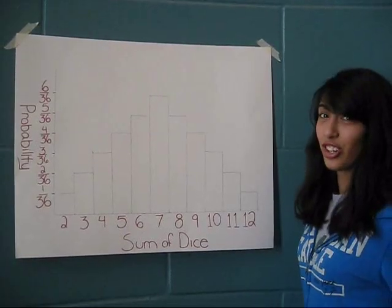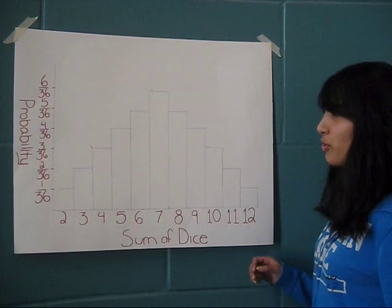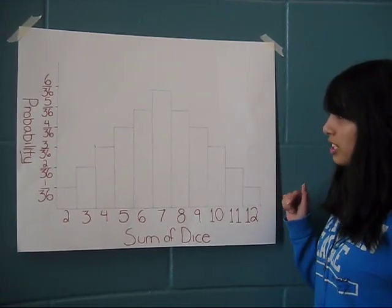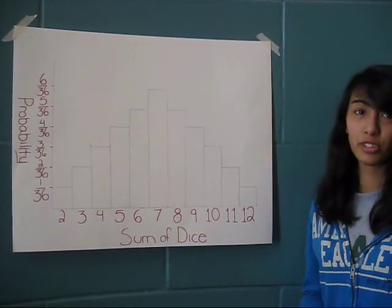This is a histogram, which is another chart showing the probability of 7 being rolled is the greatest out of all the other numbers.